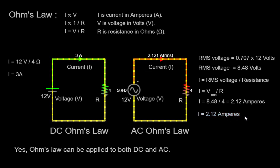As we have observed, Ohm's law can indeed be applied to both DC and AC circuits. In the DC circuit, the calculated current was 3 amperes, while in the AC circuit, the RMS current was approximately 2.12 amperes. Although the values differ due to the nature of alternating current, the fundamental relationship between voltage, current, and resistance, as described by Ohm's law, remains valid for both circuit types.